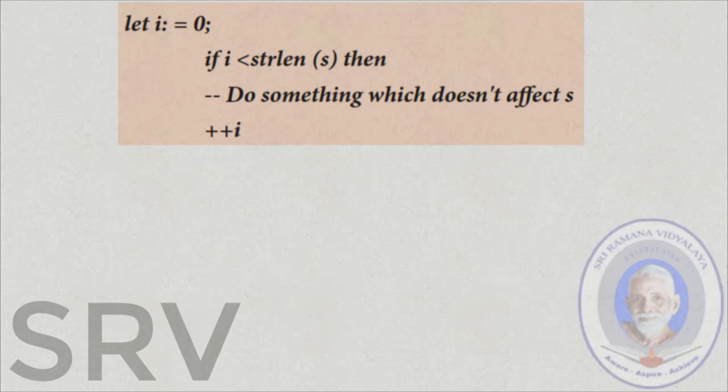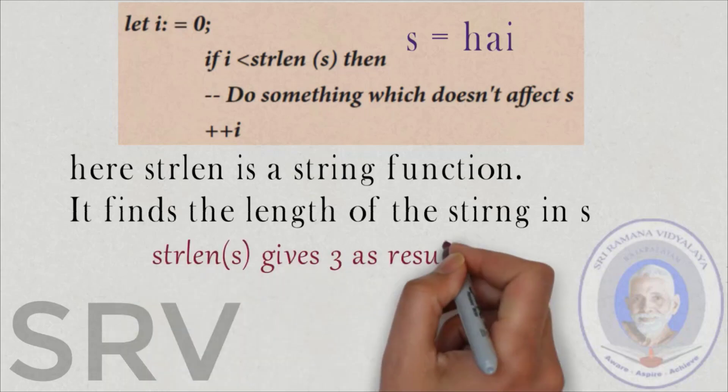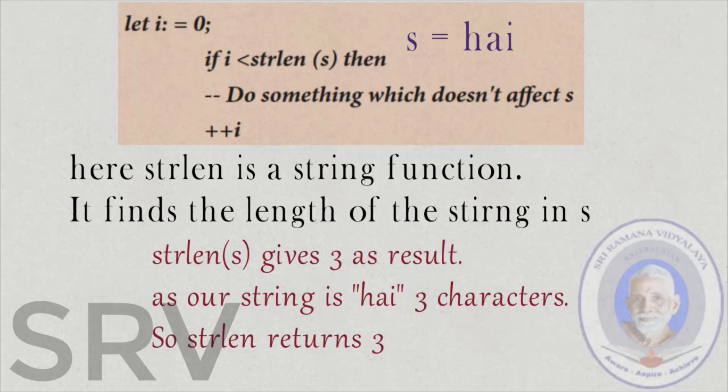The given function definition is, let i is equal to 0. If i less than strlen of s, then do something which doesn't affect. Let's give value for s as high. Here strlen is a string function. That is, it finds the length of the string in s. So, each time the strlen of s is checked. For us strlen of s gives 3 as result as our string is high which is a 3 character. So strlen that is the string length returns 3 from the function.